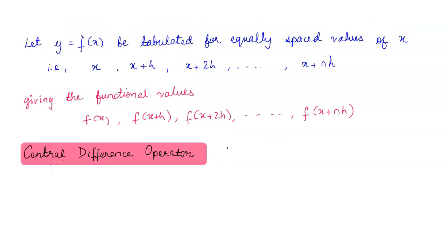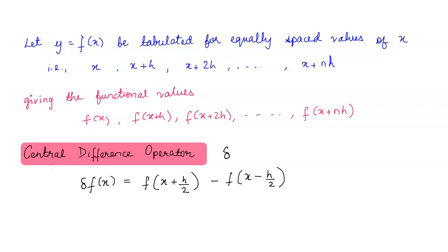Let's start with the central difference operator. It is denoted by delta (δ), and it is defined as: delta f(x) equals f(x plus h/2) minus f(x minus h/2). Previously in all the operators, we took x plus h or x minus h, but with the central difference operator we consider the h/2 form. This can also be written as delta yᵢ equals yᵢ₊₁/₂ minus yᵢ₋₁/₂, but we will use the first relation to avoid confusion.